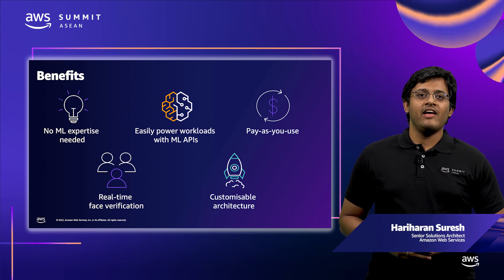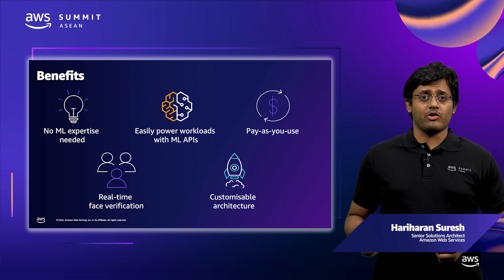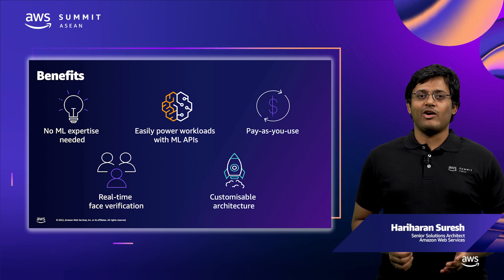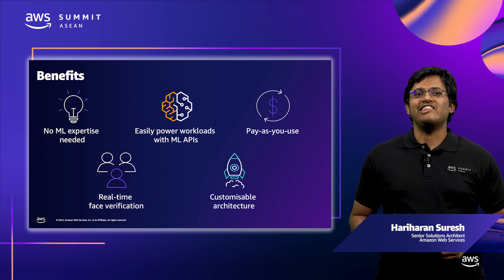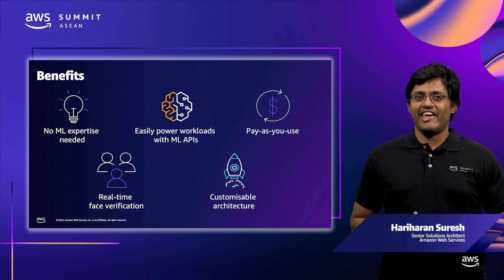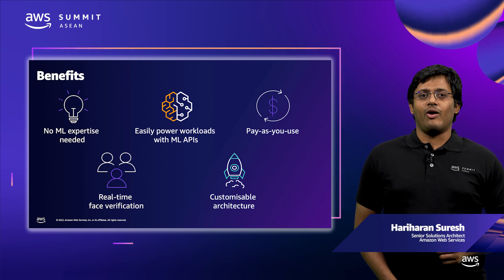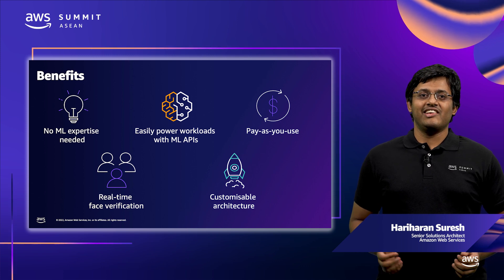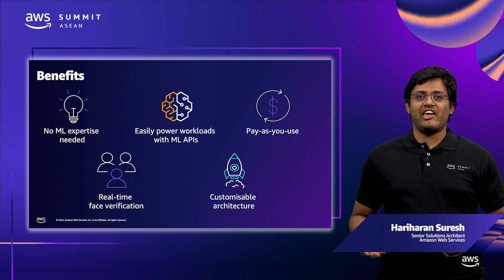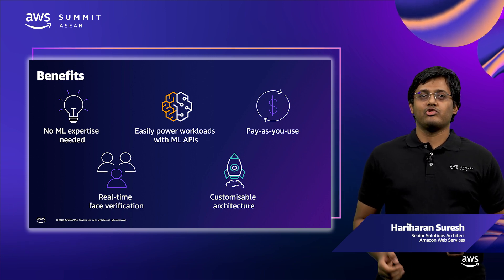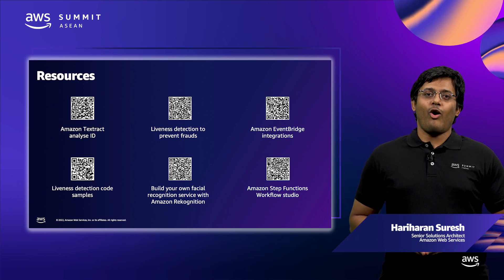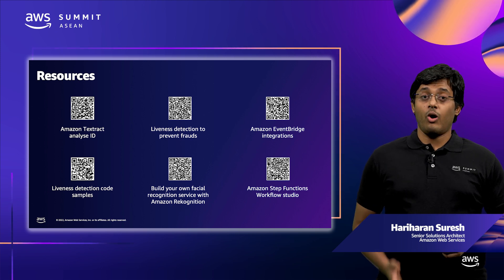Let's talk about the benefits of the solution. Your developers don't need ML expertise to power your workloads with biometric face validation. Instead, they can power their workload with machine learning through a set of APIs integrated with your web applications — no model training or management needed. Event-driven architectures are more computationally efficient and cost-effective, and can be more reliable against transient issues or sudden changes in demand. You can customize this architecture using AWS Lambda functions. This event-driven solution needs no upfront commitment; you pay only on the invocations you make through your application, enabling a pay-per-use costing model. Check the links provided to explore and customize the architecture, including code samples and documentation pointers for all the services shown today.